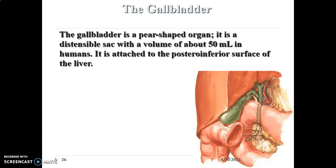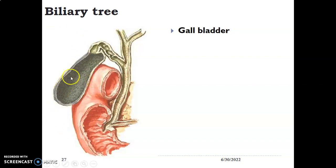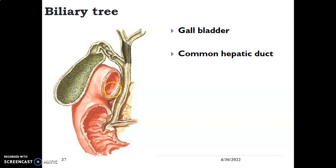Now we go to the histology of the gallbladder. The gallbladder is a pear-shaped organ that is very distensible and has a volume of 50 mL in humans. It sits on the posterior inferior surface of the liver. The gallbladder stores and concentrates bile. The liver hepatocytes produce bile, and through biliary canaliculi this bile gets to the gallbladder for storage and concentration. From the gallbladder, bile is then able to get to the gastrointestinal tract.